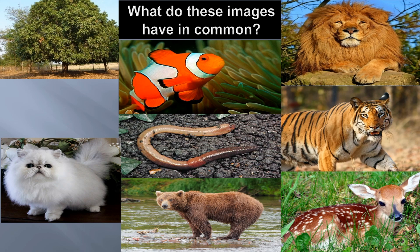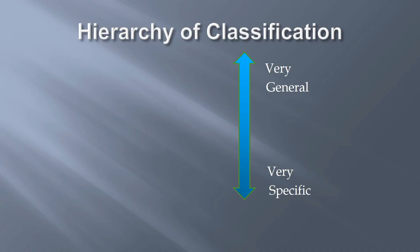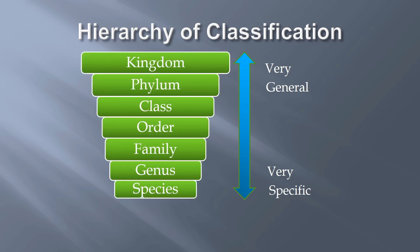What do these images have in common? Yes, all are living things. In the taxonomic hierarchy, the topmost category is kingdom. Kingdoms are split into phylum. Each phylum is divided into classes, classes into order, order into family, family into genus, and genus into species. Kingdom is the largest level and very general — that is, more number of organisms and less similarity. Species is the lowest level and very specific — that is, fewer organisms and more similarity.